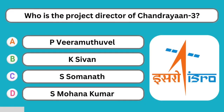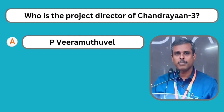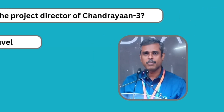Question number twenty-seven: Who is the project director of Chandrayaan 3? S. Somnath is the chief of ISRO, but the project director is P. Veeramuthuvel.